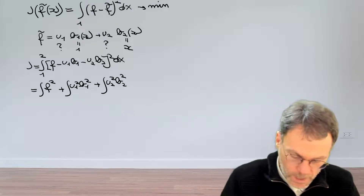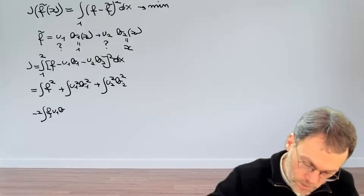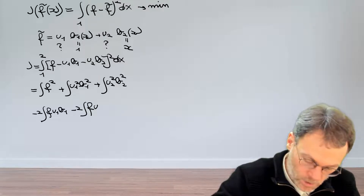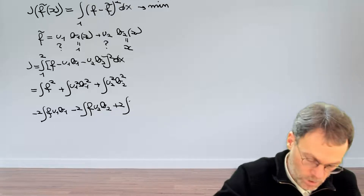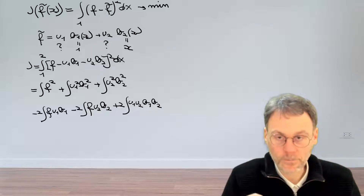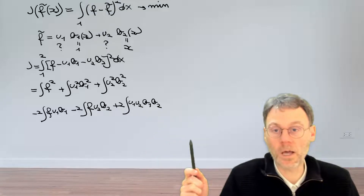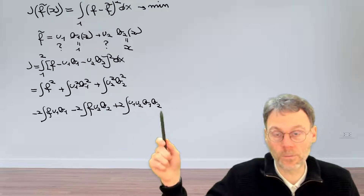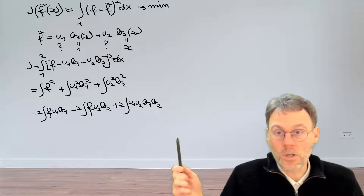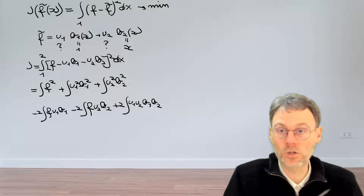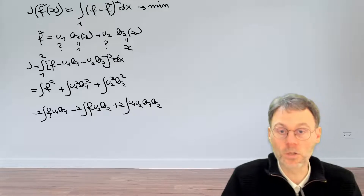These were the squared terms. Then we have the double products: minus 2 times the integral of f·u1·b1, minus 2 times the integral of f·u2·b2, and plus 2 times the integral of u1·u2·b1·b2. It's important to realize that u1 and u2 are plain constants, while b1 and b2 depend on x and play a big role in the integration. Now we know what our functional looks like. Pause the video to think about how to minimize it to find u1 and u2.